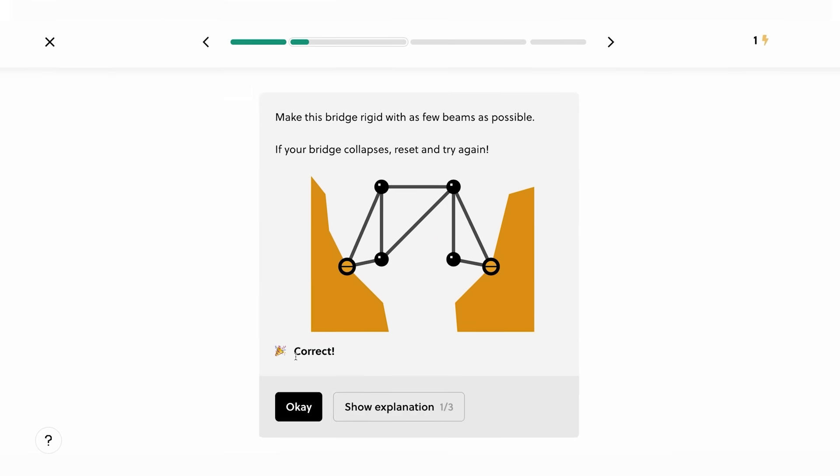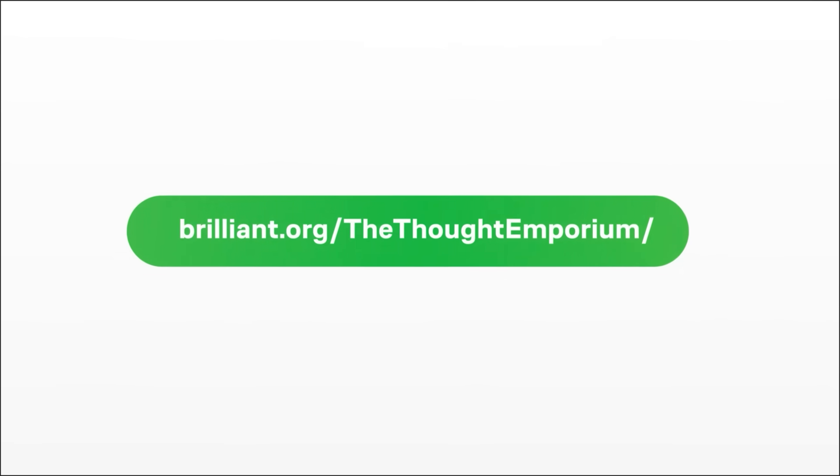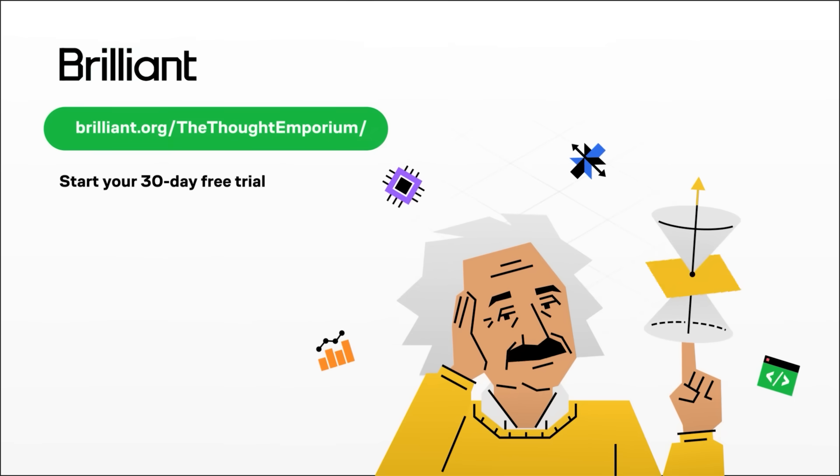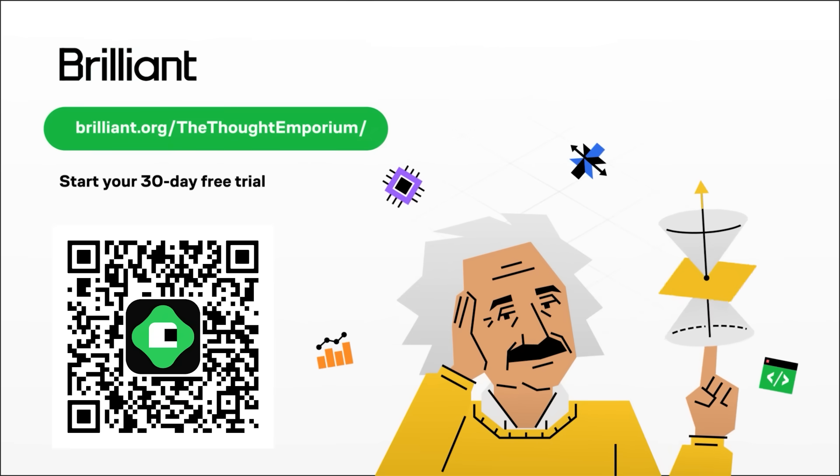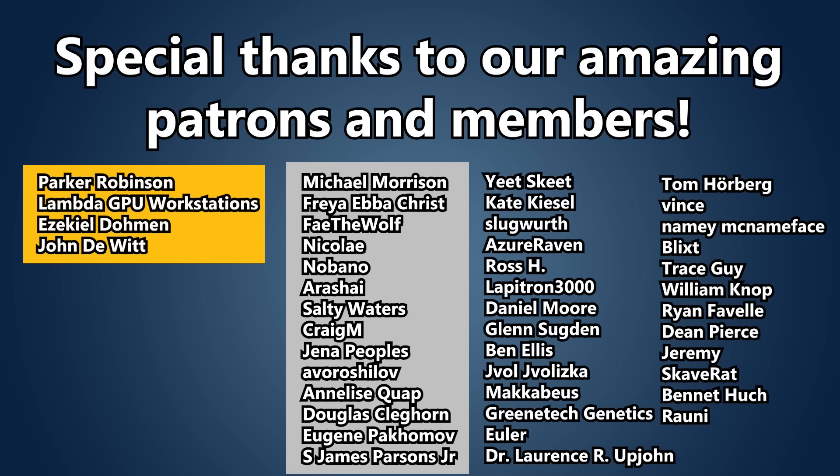To try everything Brilliant has to offer for free for a full 30 days, visit brilliant.org slash the thought emporium or click the link in the description. And as an added bonus, you'll also get 20% off an annual premium subscription. But with that, we come to the end of this video. A special thanks to our amazing patrons and channel members that help make these videos possible. But that's all for now, and we'll see you next time.